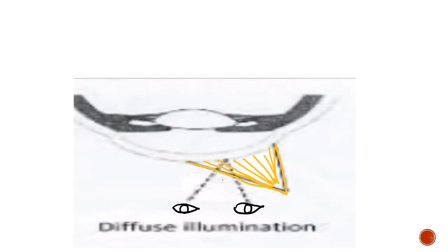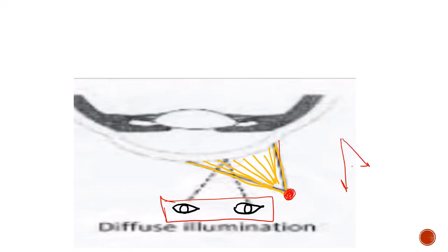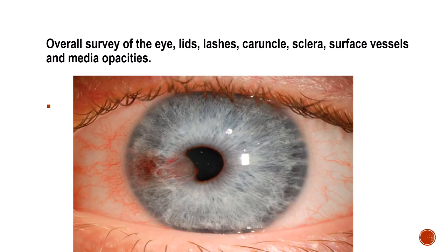In diffuse illumination, the illumination system throws a wide beam sweeping across the cornea, and the examiner views the eye with the angle between the illumination system and the viewing system being about 45 degrees. When this angle becomes 90 degrees, that is called tangential illumination — meaning you are throwing the light almost parallel to the surface of the iris. Diffuse illumination helps survey the entire eyeball along with the lids, lashes, caruncle, sclera, surface vessels, and media opacities all at once.